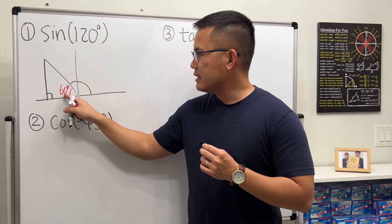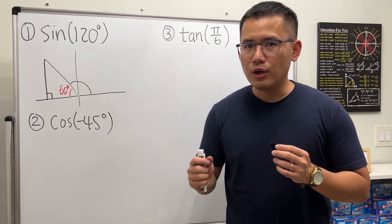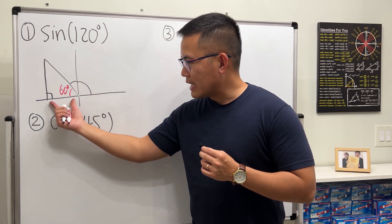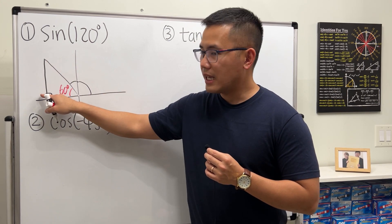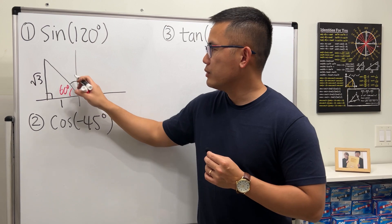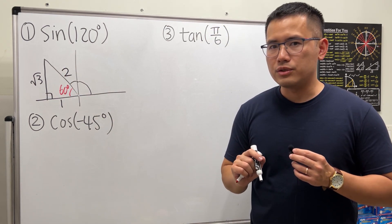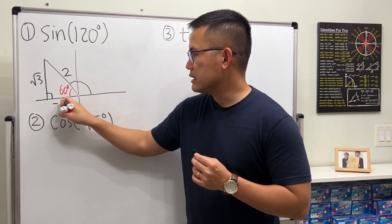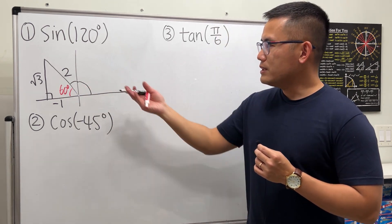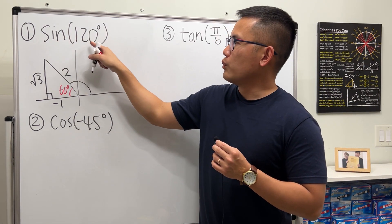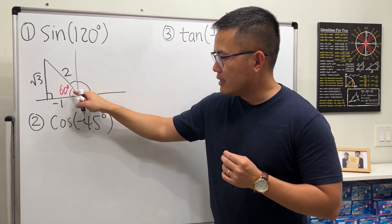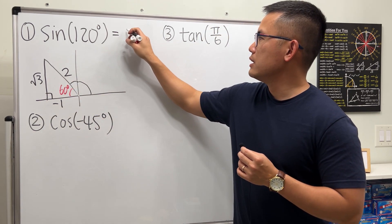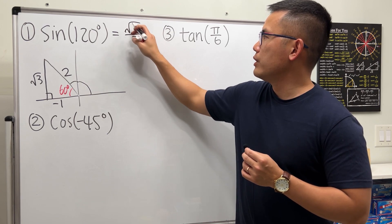Now we have 60 and 90 degrees, so the third angle is 30. The ratio of sides of a 30-60-90 special right triangle: the shortest side is 1, the longer side is √3, and the hypotenuse is 2. Notice this side of 1 is to the left — it has a negative x value, so it's technically negative 1. Sine of 120 degrees is opposite over hypotenuse, which is √3 over 2.